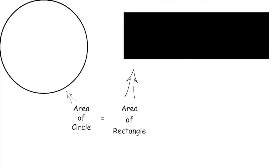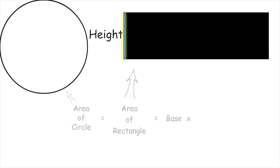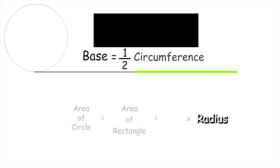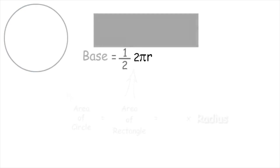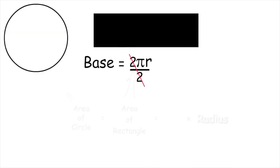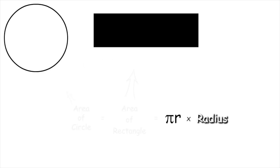Our rectangle is made up of a circle. Thus, we can say that area of a circle is equal to area of a rectangle. Area of a rectangle is base into height. Our height is radius r. Our base, that is the wavy side, is one half of the circumference. Substituting the value of circumference as 2 pi r and cancelling out 2, we have our base as pi r. Now, multiplying the two substituted dimensions, pi r into r, we get area equals pi r square, which is our formula.